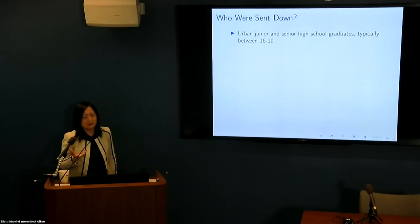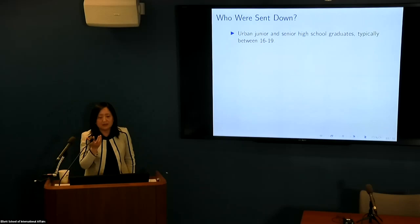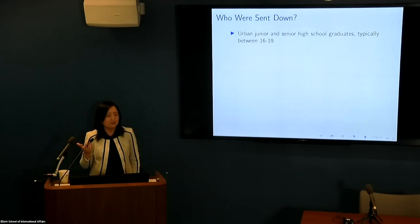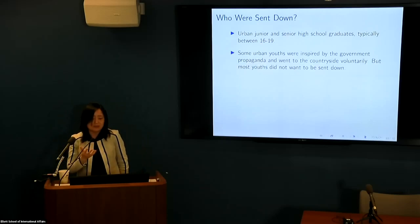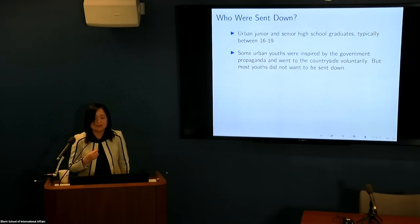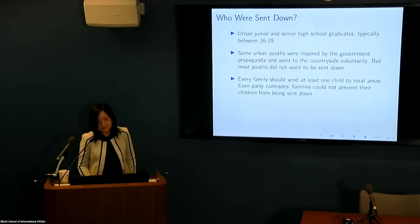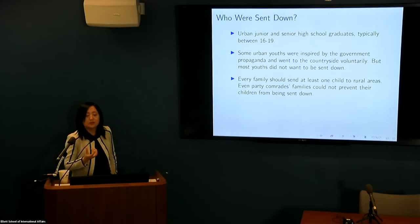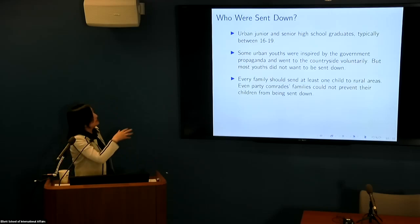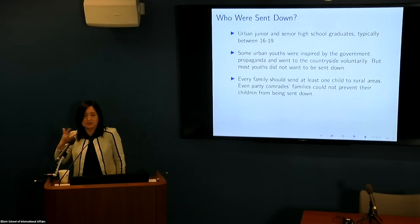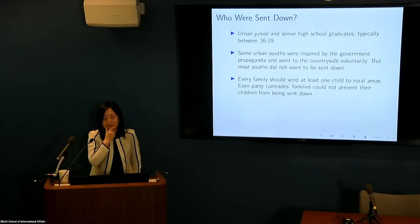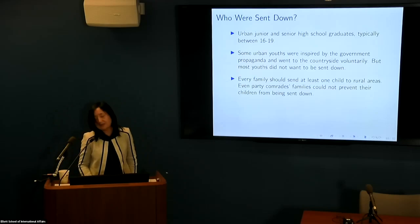Who were sent down? Urban junior and senior high school graduates, typically 16 to 19 years old. With colleges closed, they had nowhere to go and were sent to work with farmers. Some urban youths were inspired by government propaganda and went voluntarily, but most did not want to go. Every family was required to send at least one child to rural areas. Even party elites couldn't prevent their children from being sent down — Xi Jinping's family, for instance, he and many of his siblings were also sent down.